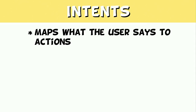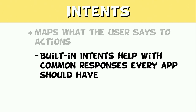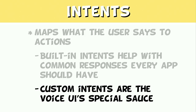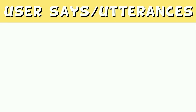Intents map what the user says to specific functionality or actions of your UI. There are built-in intents that your platform provides, which can make it easier to implement default welcome responses, help, or ending the conversation. Each platform has built-in intents that can help with specific responses depending on context, so you're not going to have to reinvent those wheels. Then there are custom intents, which are your voice UI's special sauce — the direct functionality you want to provide. You also need help intents and a way for users to quit your UI, and you'll need those to pass the QA process.